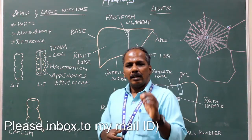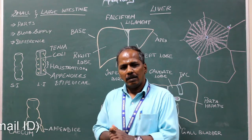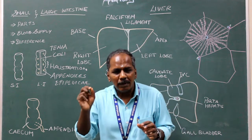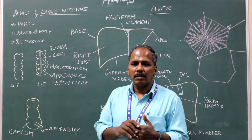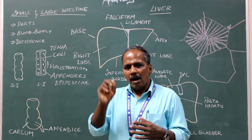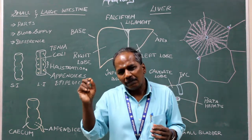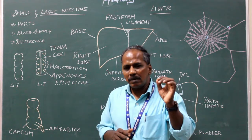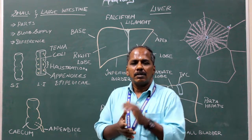Parts of the small intestine: it consists of the duodenum, jejunum, and ileum. The duodenum is the widest and the fixed part of the small intestine. The jejunum constitutes the upper two-fifths of the mobile part, while the ileum constitutes the lower three-fifths of the mobile part of the small intestine.